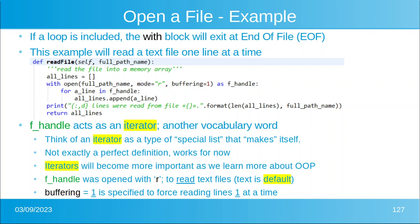fhandle acts as an iterator — that's another vocabulary word for object oriented design and programming. An iterator is a type of special list that kind of makes itself. Before, we've created a list and specified the members; an iterator creates the members as you go through it. This will become more and more important as we learn more about object oriented programming.